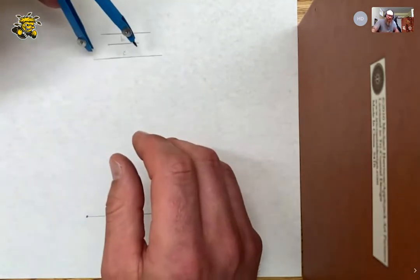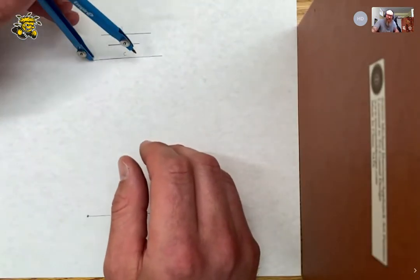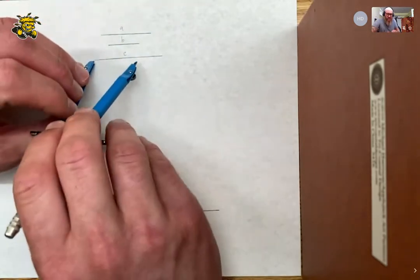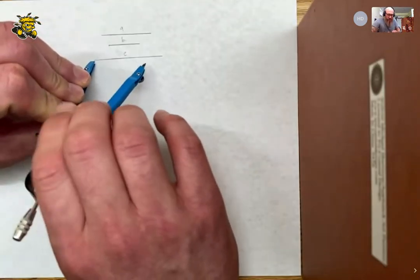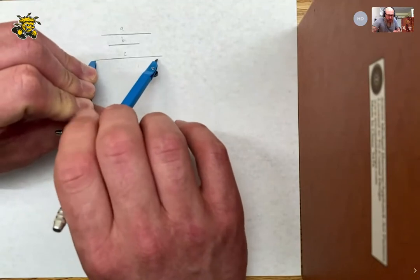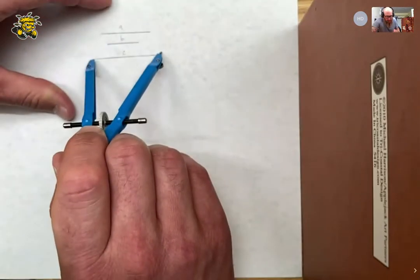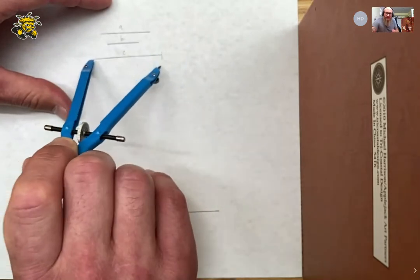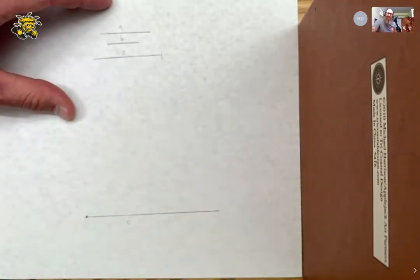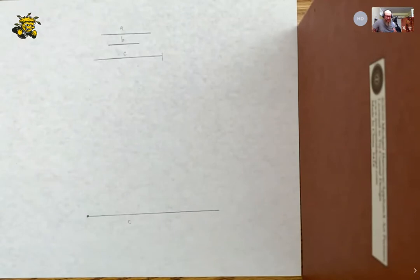What I need to do now is take my compass, put the needle at one end of this segment C. I need to open the compass so that the radius is the length of C and I'll swipe just to make sure. The point was in the right spot. I swiped the right amount. That's the length C. Now I want to copy that length. So I go down to this segment I just drew and I'm going to swipe off C.